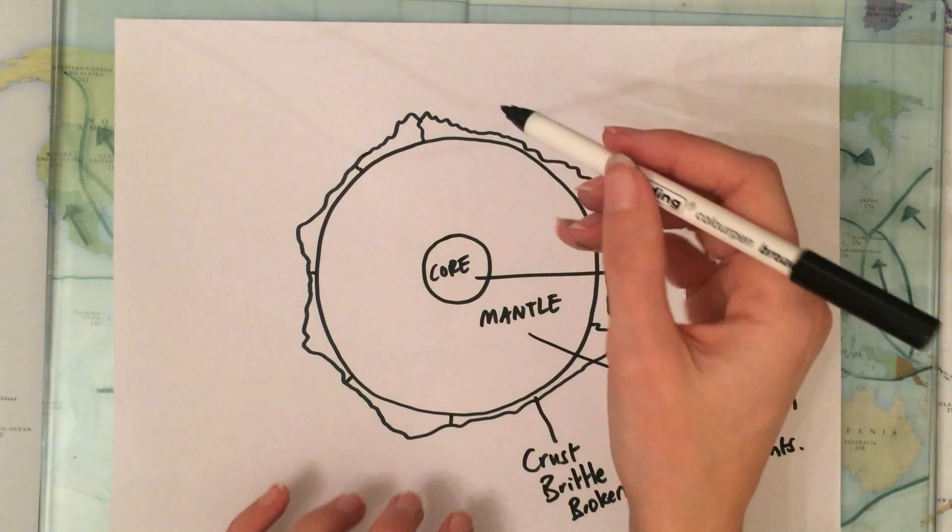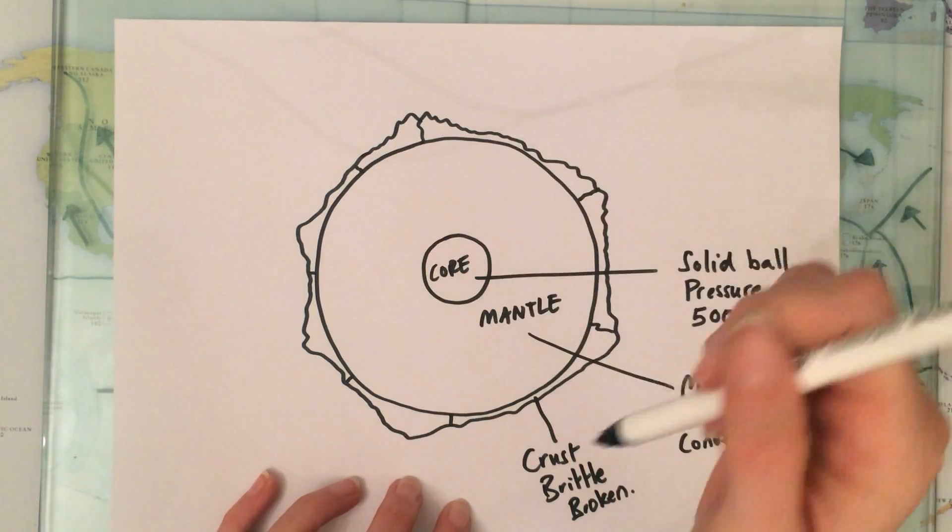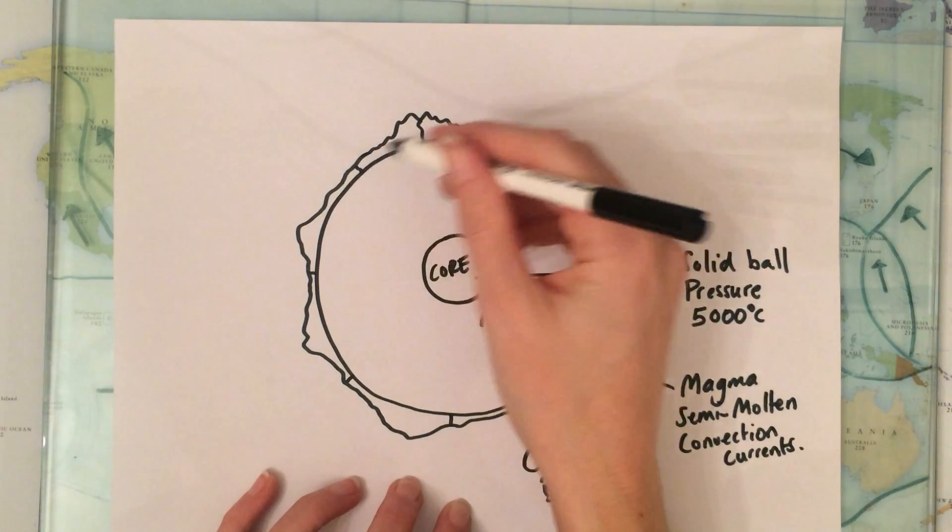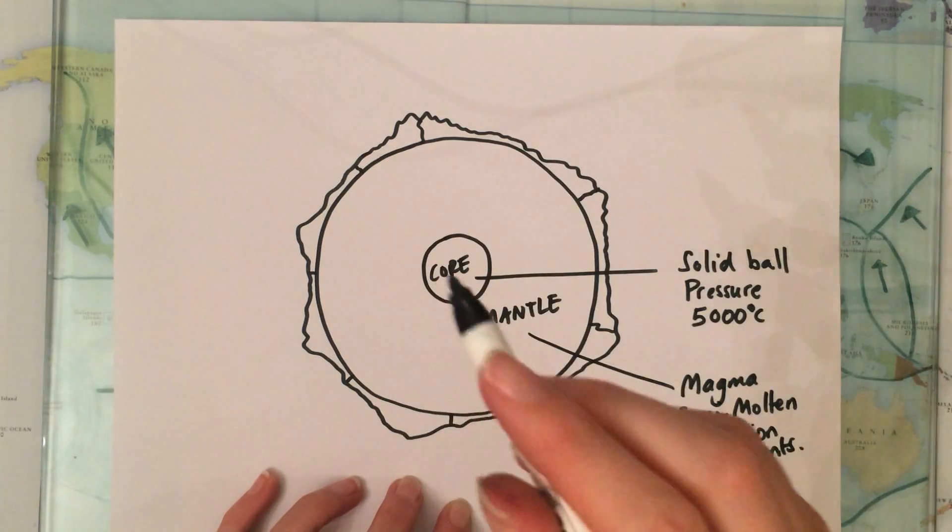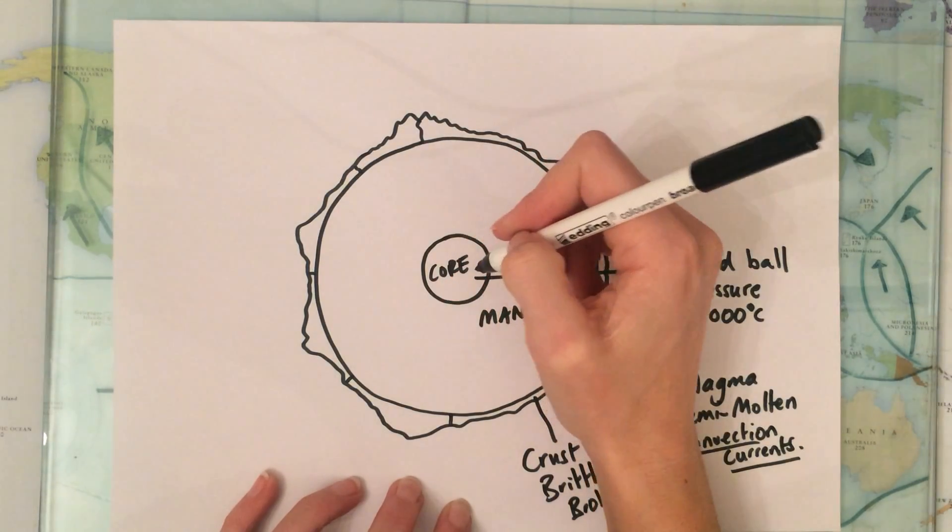Plate tectonic theory is that these pieces are floating on the earth's mantle and they are moving and they move because of convection currents in the mantle. So coming back to this term here, the core is very very hot.